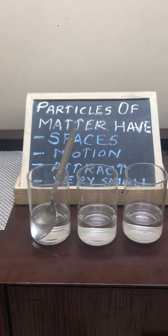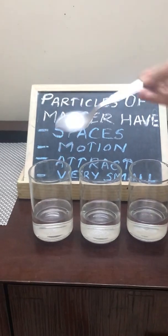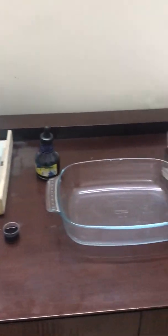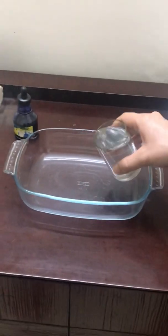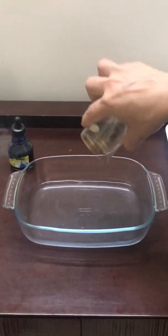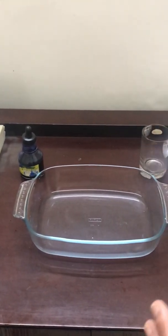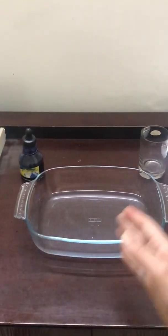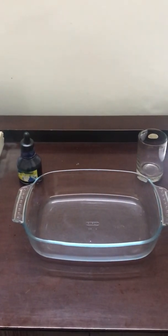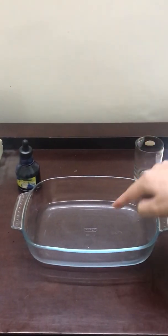In another bowl, I add water. You can see that water quickly takes the shape of this particular container — it spreads all around, and the water particles are equally spread. This shows that there is a force of attraction between the particles, and these particles of water are actually occupying some space of this particular bowl.